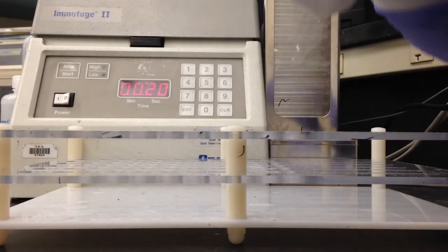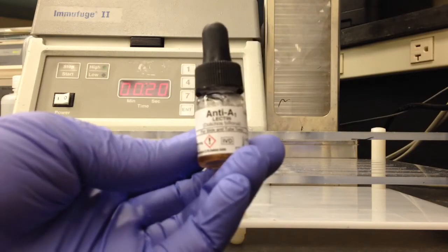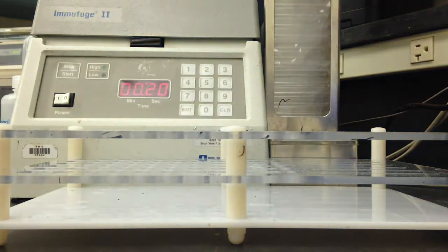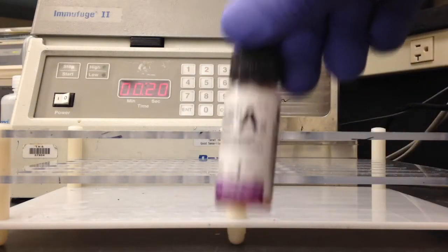In this video I'm going to show you how to test for subgroups of A. To do this you're going to use A1 lectin, which will agglutinate A1 red blood cells.